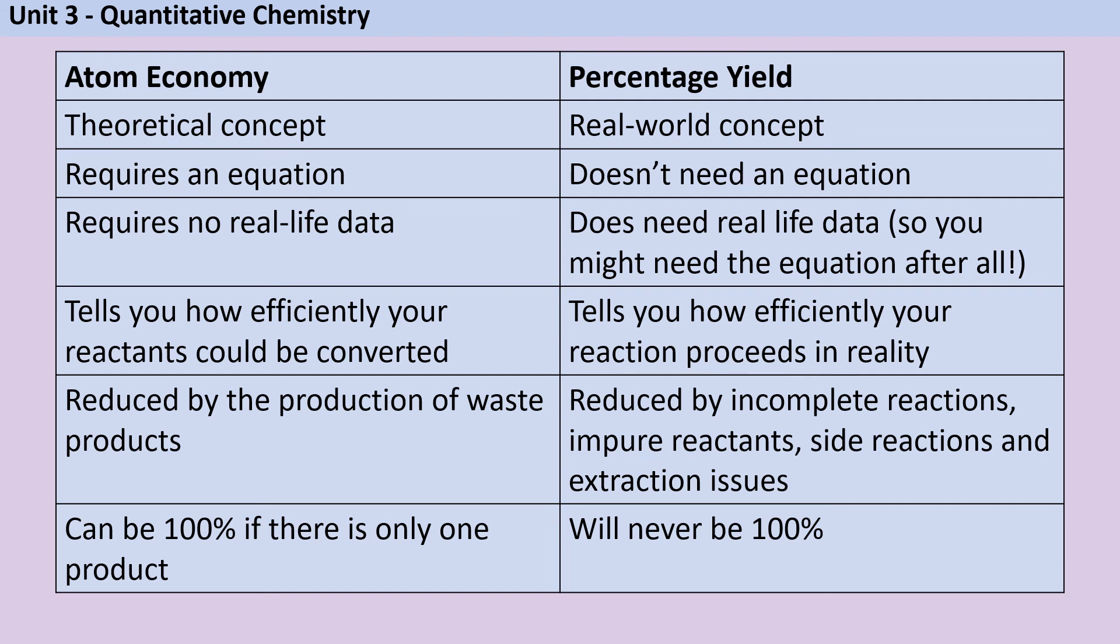Percentage yield is a real world concept. You don't necessarily need an equation to work it out, you just need to know how much you should have made and how much you did make. It needs some real life data to do this. It tells you in reality how efficiently your reaction, and to be honest your entire manufacturing process, proceeds in reality. It can be reduced by a number of things including incomplete reactions, impure reactants, side reactions, and also issues with extraction. And it will never be 100%.